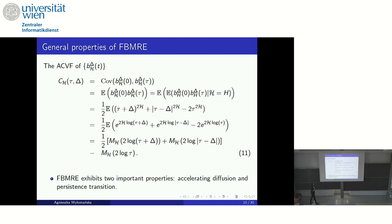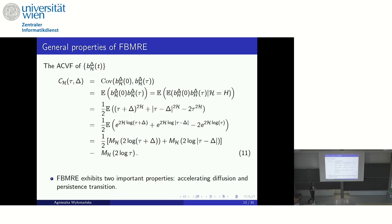An important property: the increment process for FBMRE is also a stationary process, which is good. In this case the autocovariance function depends only on the lag tau. Based on these general properties, we found that accelerating diffusion exists and also the persistent transition — for a special case of random variable H. This is a very important property, and in our papers we have a nice plot prepared by Michal, who is here, clearly showing these properties.